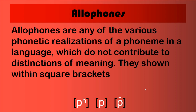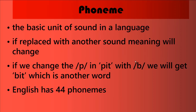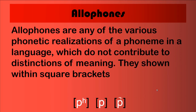A single phoneme can be realized phonetically in slightly different forms depending on where that phoneme occurs. Allophones are the various realizations of a phoneme which do not contribute to distinctions in meaning. If you use one phoneme instead of another, there will be a change of meaning. But if you use one allophone instead of another, your pronunciation will not be that good, but the meaning will not change. We represent allophones within square brackets, while phonemes are always represented between slashes.